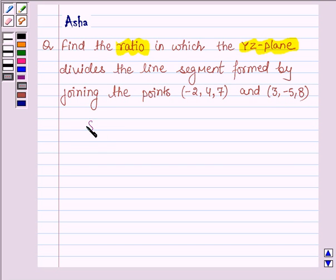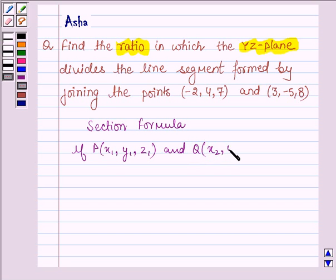So first let us learn the section formula which says if P with coordinates X1, Y1 and Z1 and Q with coordinates X2, Y2 and Z2 are the two points